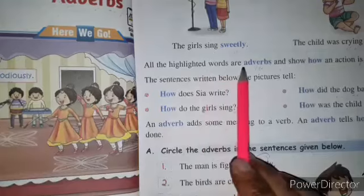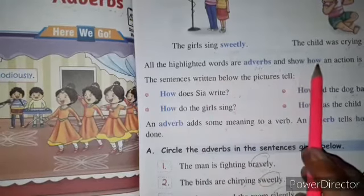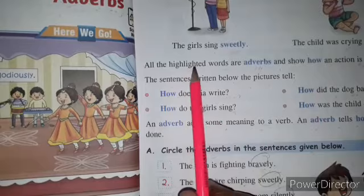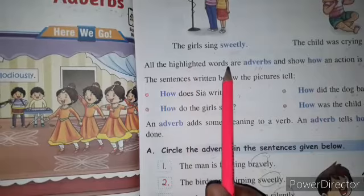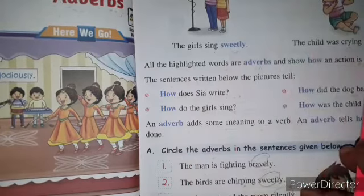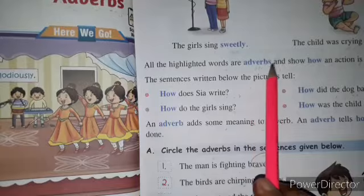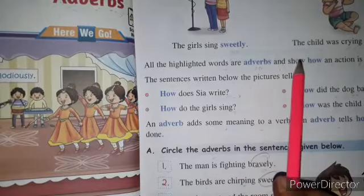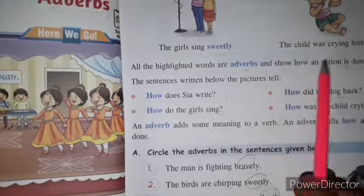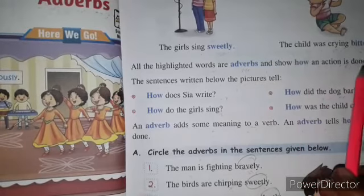All the highlighted words are adverbs and show how an action is done. Jo sare highlighted, chamaktate hue words hain — jaise sweetly, bitterly, neatly, loudly — ye sabhi words adverbs hain. Jo hume batate hain, dikhate hain ki koi kaam kaisa ho raha hai, kaisa kar raha hai.